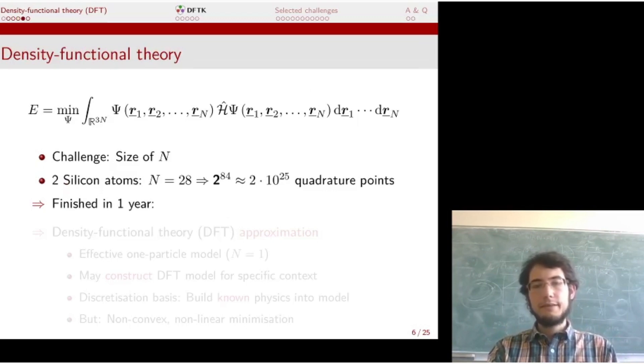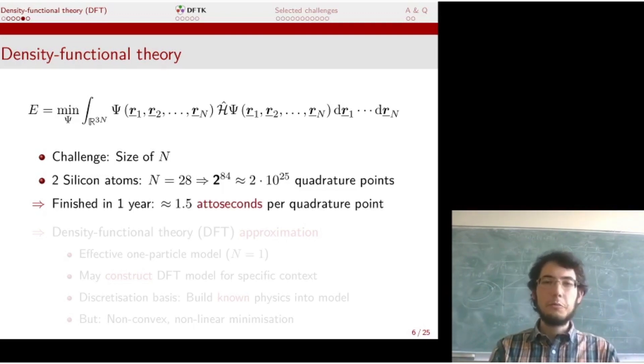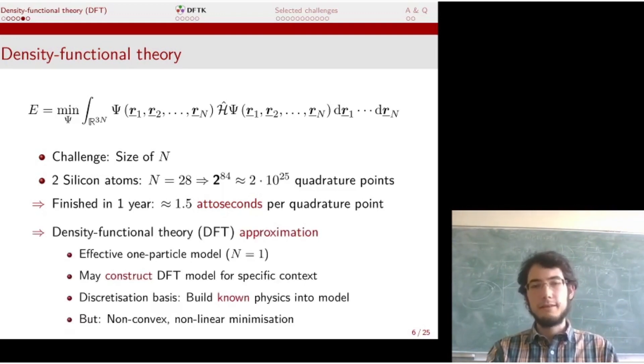Density functional theory basically answers the question of how to compute such a thing, because in practice this integral is pretty large. It's this integral r to the 3N. What is N? Well, already for a small system like just a silicon unit cell—two silicon atoms—N is 28. So the dimensionality of this integral is 84. If I just take two quadrature points along each dimension, I get the humongous number of 2 to the power of 20, or 10 to the 25 quadrature points. If I want to finish just one integral in one year, I need 1.5 attoseconds per quadrature point. Doing a minimization needs multiple evaluations of this integral, so it gets really expensive up to the point where it's just not practical.